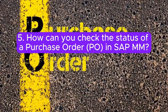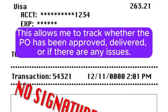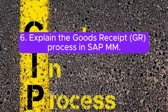Question 5: How can you check the status of a purchase order (PO) in SAP MM? Answer: I use transaction code ME23N to view the details and status of a PO. This allows me to track whether the PO has been approved, delivered, or if there are any issues.